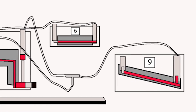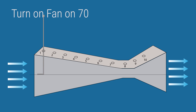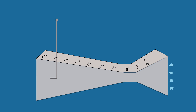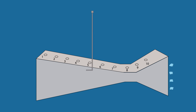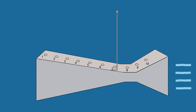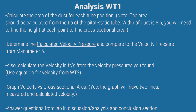For manometers 6 and 9, we're only connecting to the lower side. Turn on the fan to 70. Place the pitot tube to hole 1 and adjust it so the tip is centered. After recording the pressure, repeat the step through holes 2 through 10. You also need to find the calculated velocity pressure by subtracting the static pressure reading from the total pressure reading. This value must be close to the velocity pressure obtained from manometer 5.